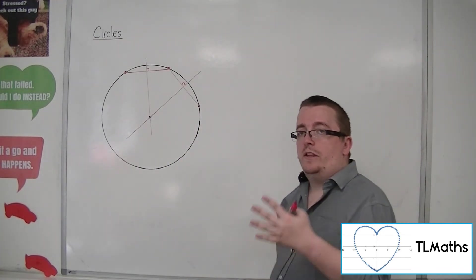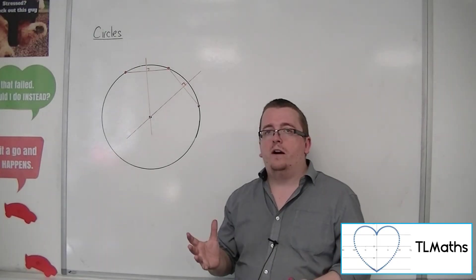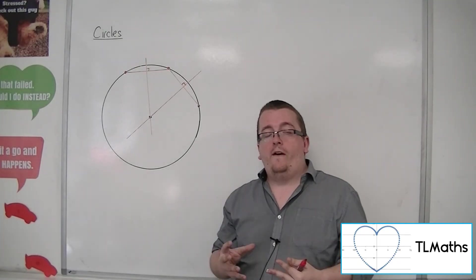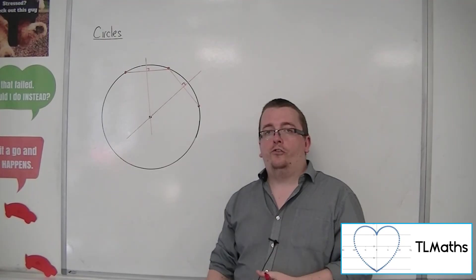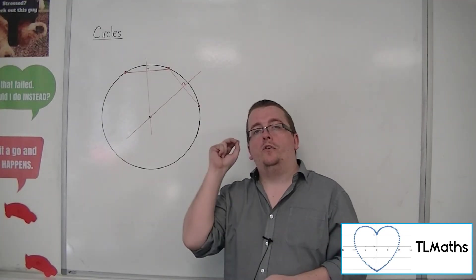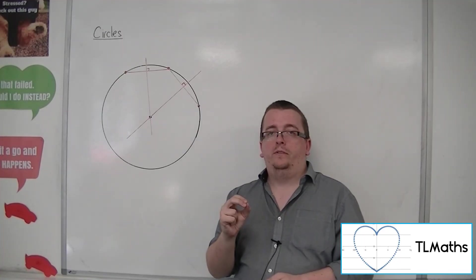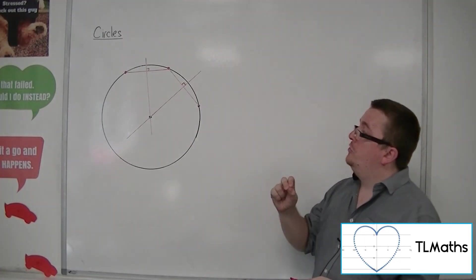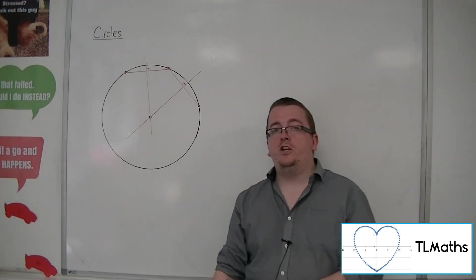So from just having three points, wherever they are, you can define a circle that goes through them. So a circle is only dependent on three points. So that allows you to work out all the other bits of information that you need.